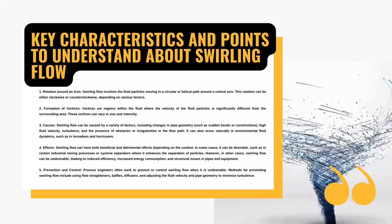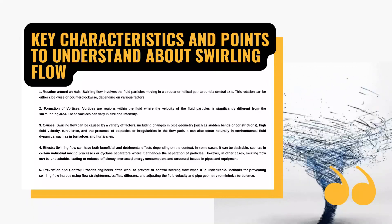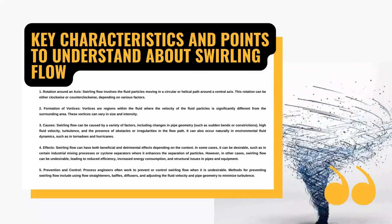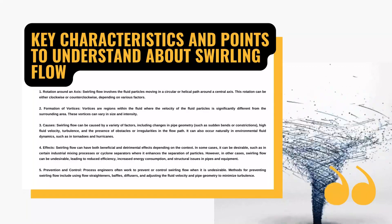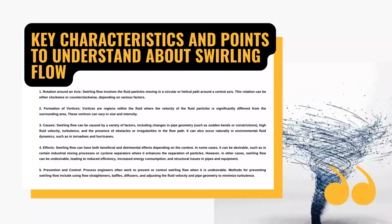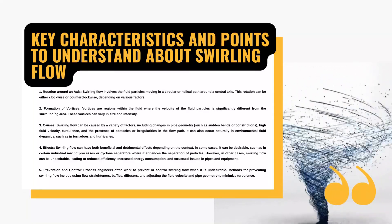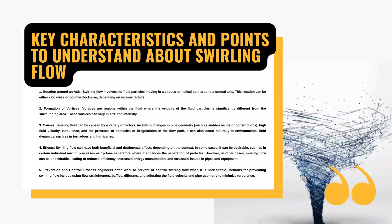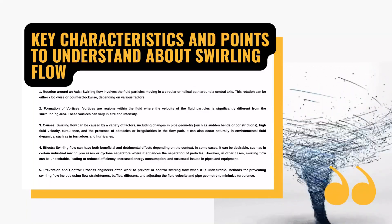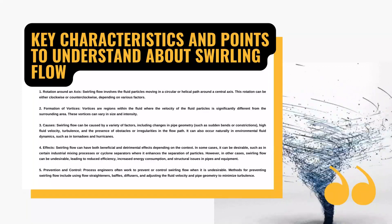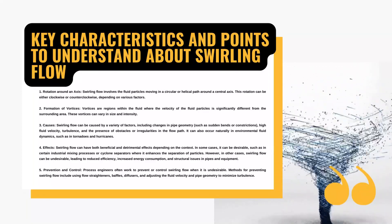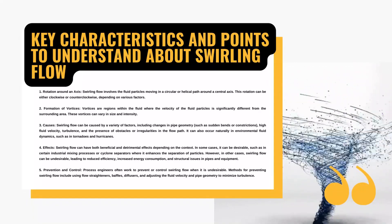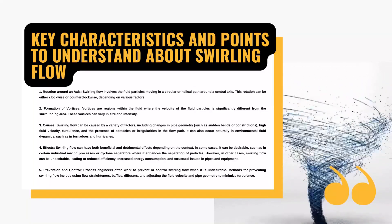You can even find swirling flow occurring naturally in environmental fluid dynamics, like the creation of tornadoes or hurricanes. Swirling flow isn't just an interesting phenomenon — it has real-world implications. In some cases it is beneficial, such as in industrial processes where it helps in mixing or particle separation, but in other situations it can lead to efficiency problems, increased energy consumption, or structural issues. To manage swirling flow, engineers use techniques like flow straighteners, baffles, diffusers, and adjustments to fluid velocity and pipe geometry.